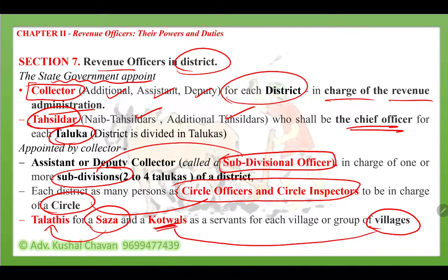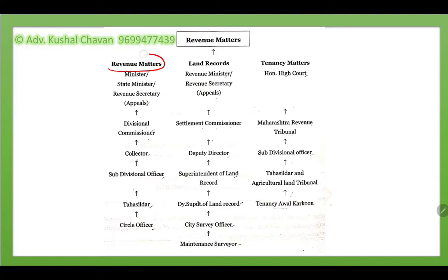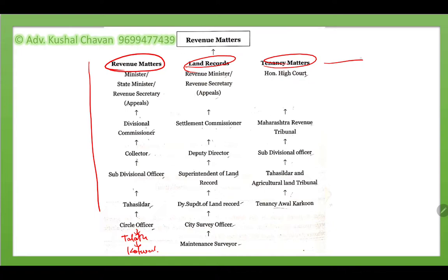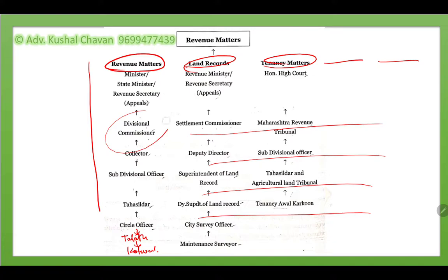To summarize: at the divisional level there is the divisional commissioner, and the district revenue officers are the collector, tahsildar, SDO, circle officer, talati, and kotwal. Related to revenue matters, this hierarchy applies. Parallel to this, there are also land records department matters, tenancy-related matters and survey-related matters — the state government may decide that one officer can perform more than one type of work.